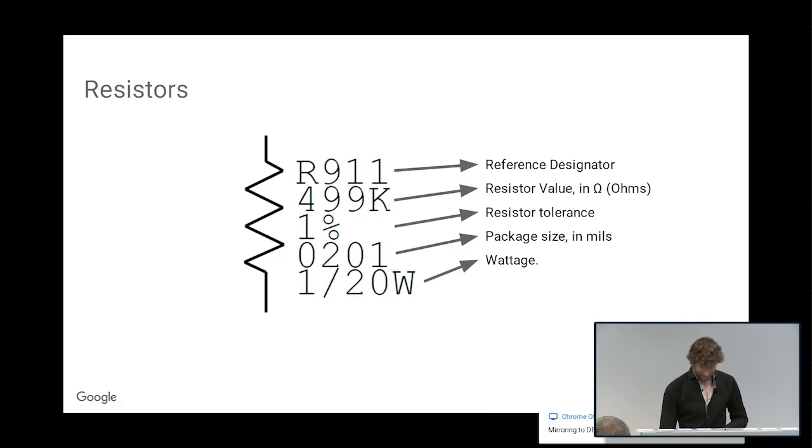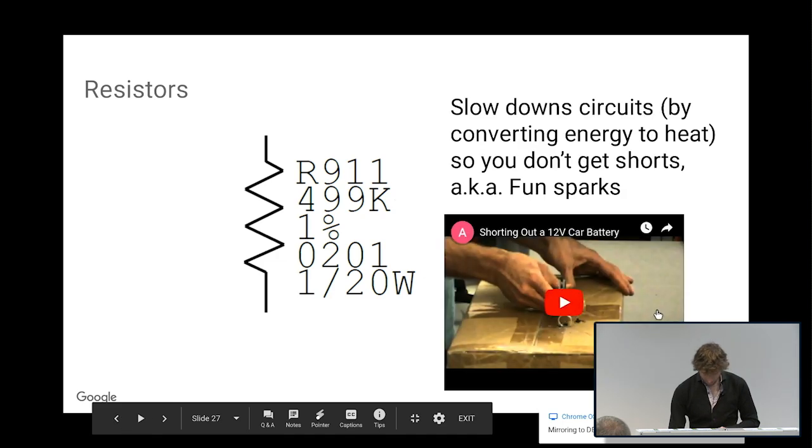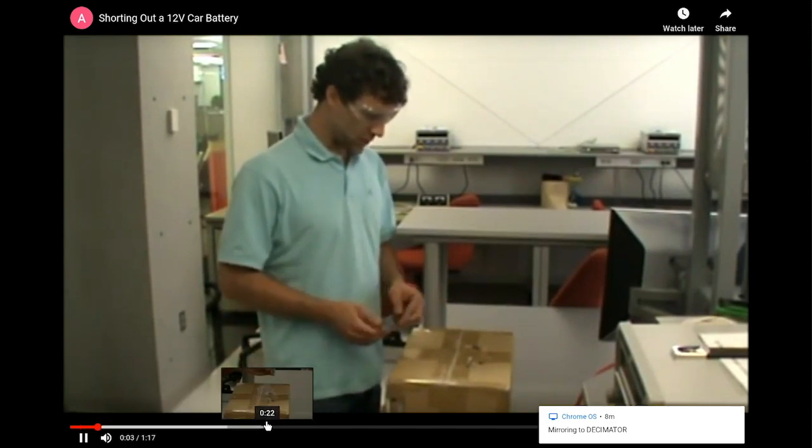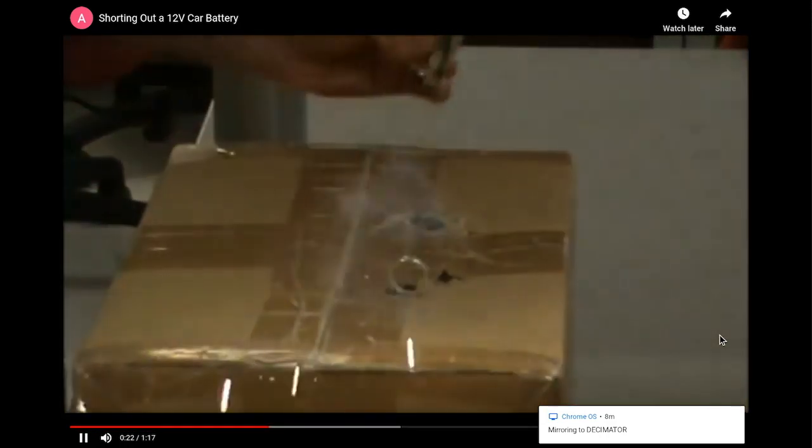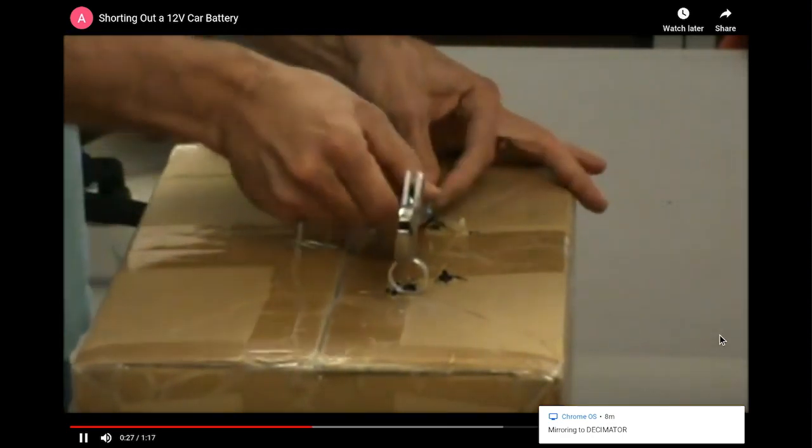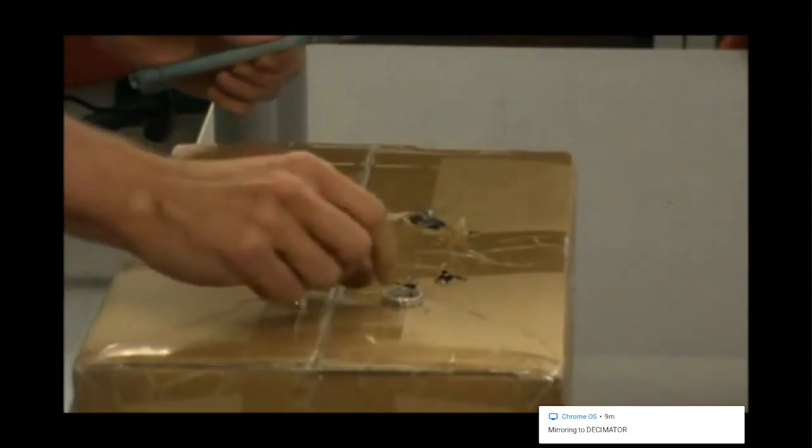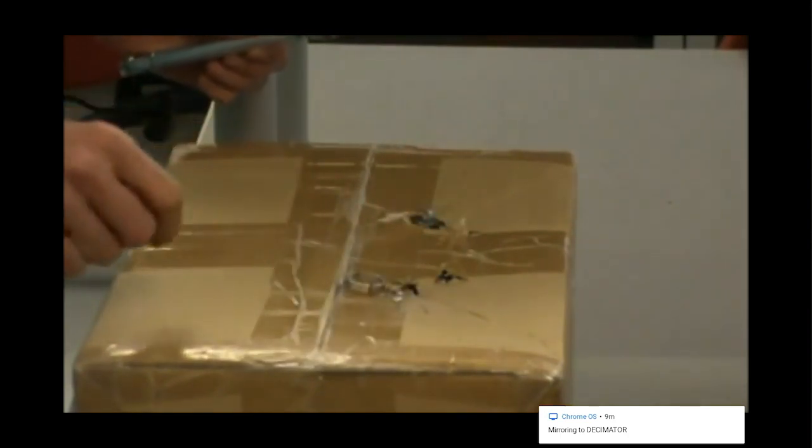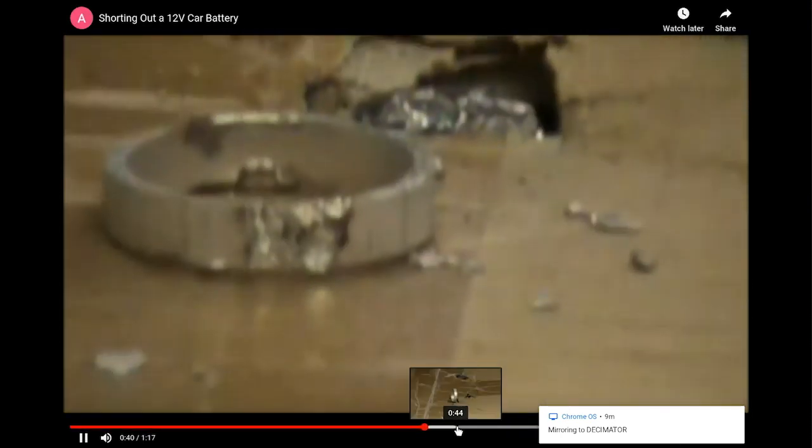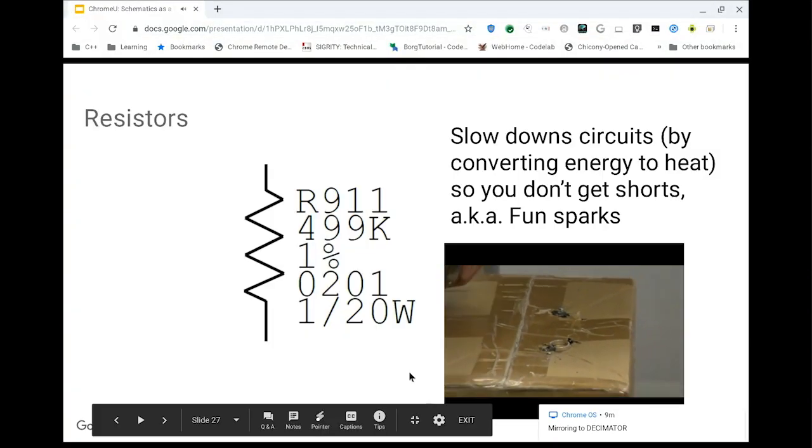I'll show you a video of what happens if you don't do that. He's using a wrench, which has a really small resistance, and he's shorting a big car battery. If you have basically no resistance and you were to plug in a battery in our Chromebook, this is what you would get, which I would argue would be an awesome product but probably not what we strive to achieve here.